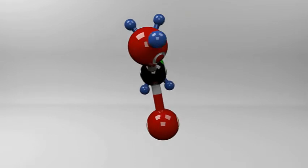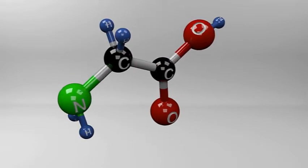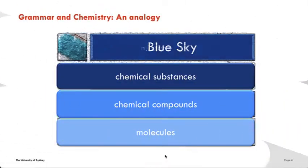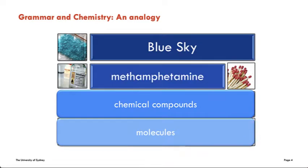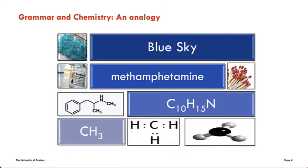When we study chemistry, we learn that all matter is composed of smaller elements. Mixtures, like blue sky, are made up of chemical substances, which are made of chemical compounds, which are made of molecules, which are made of atoms.